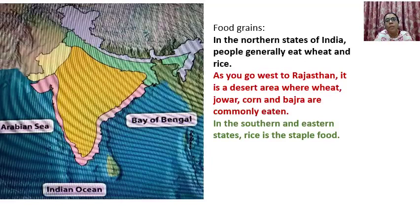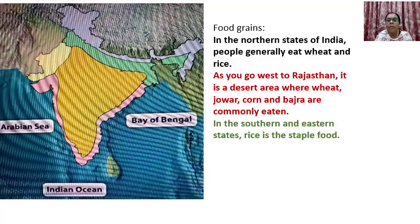In the southern and eastern states, rice is the staple food. Because in these places, rainfall is plentiful, they can cultivate a good amount of rice, so they prefer to eat rice more than other food grains.